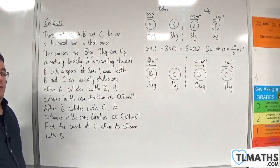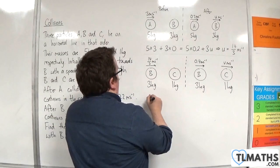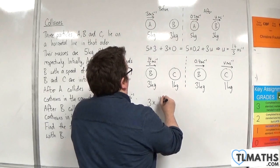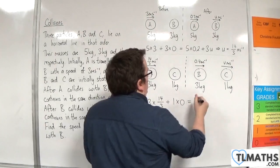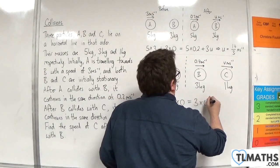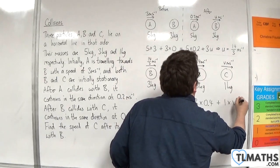We can use the conservation of linear momentum again. We will have 3 times 14 thirds plus 1 times 0 is going to be equal to 3 times 0.4 plus 1 times V.